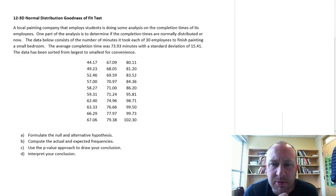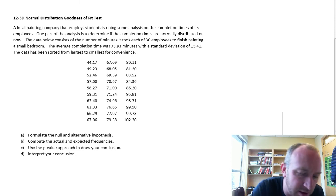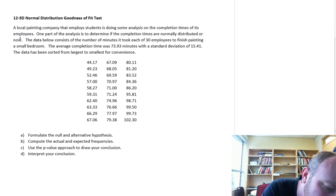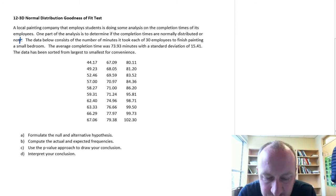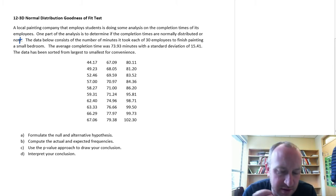Hello again and thank you for watching probably this last video in module 12. We're looking at putting together a goodness of fit test to determine whether or not we have evidence to show that a population is not normally distributed. Here we're looking at a local painting company that employs students to do some analysis on the completion times of its employees. One part of the analysis is to determine if the completion times are normally distributed or not.